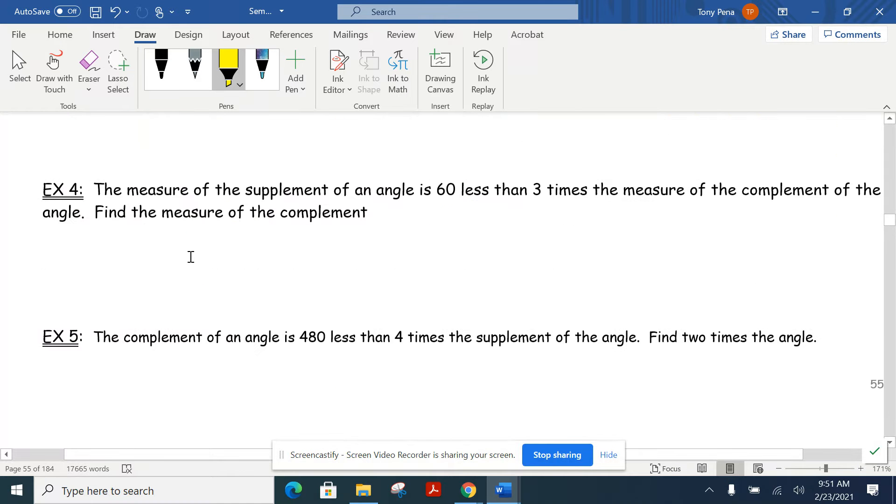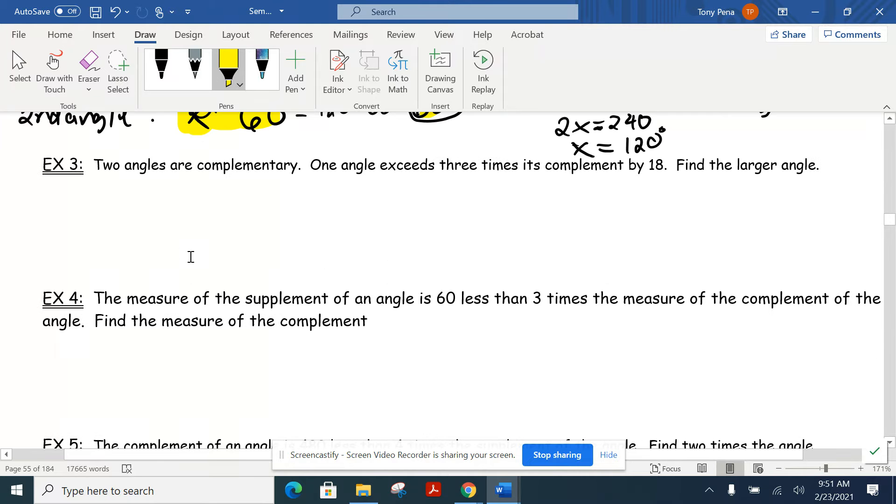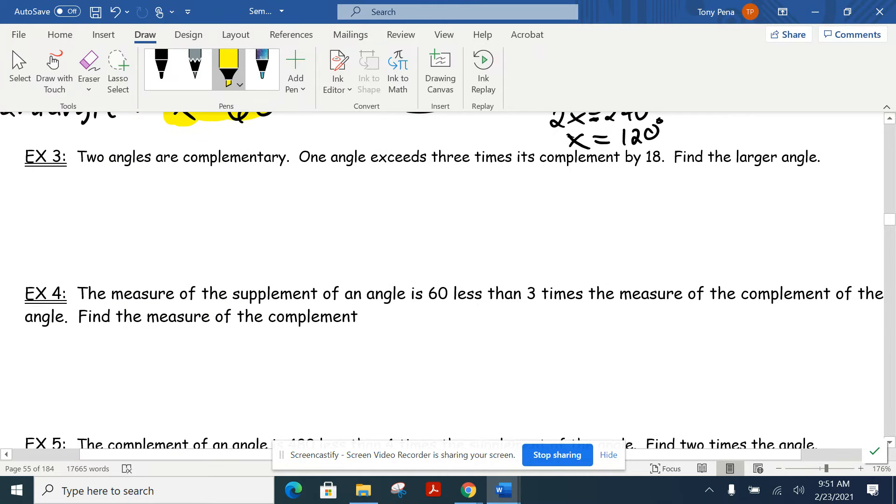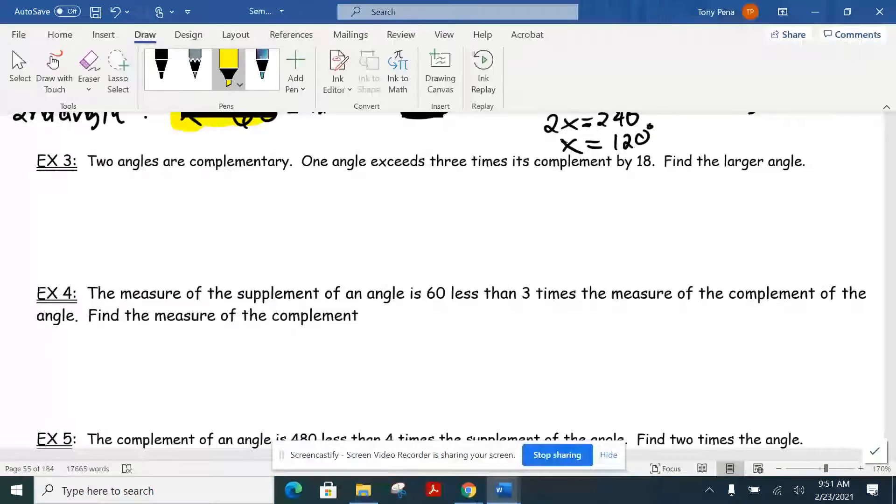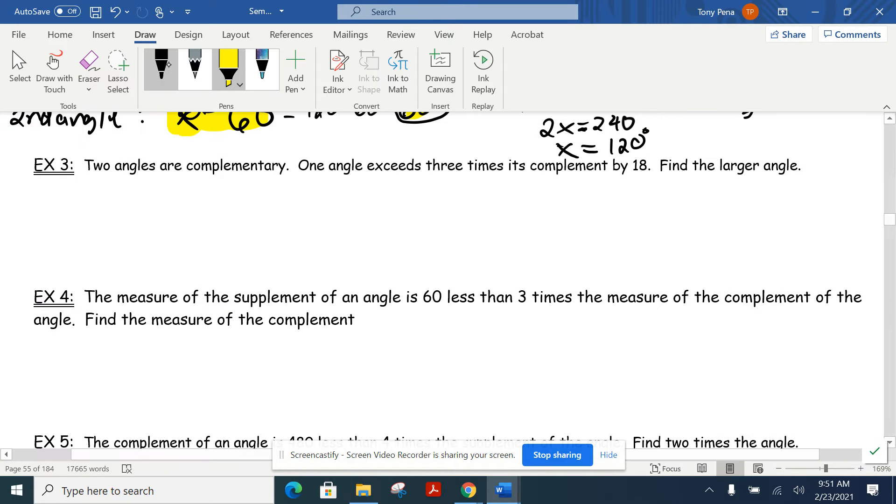All right. Number three. There's not a lot of these. You see, there's only five. So I'm going to give you two minutes. Figure out number three. See what you think. See if we can set that up. Read through the problem. Pick out some of those keywords. Then make sure you answer the question. We're looking for the largest or the larger of those two angles.